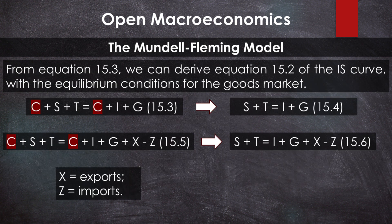The IS curve equation (equation 15.2), which provides the equilibrium conditions for the goods market, is derived from the equilibrium condition for a closed economy, starting from equation 15.3: C plus S plus T equals C plus I plus G. By canceling C from both sides, we have S plus T equals I plus G. In the open economy model, we include exports X minus imports Z — that is, net exports — on the right-hand side. This gives C plus S plus T equals C plus I plus G plus X minus Z. By canceling C from both sides, we get equation 15.6, the IS equation in the open economy model: S plus T equals I plus G plus X minus Z, where X minus Z are net exports representing the contribution of the external sector to aggregate demand.